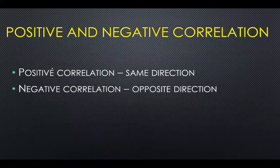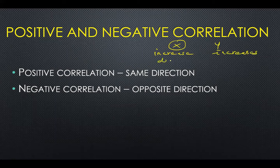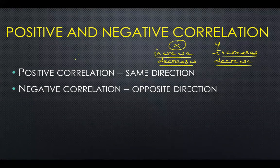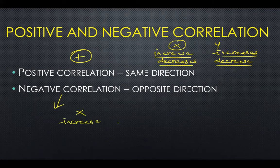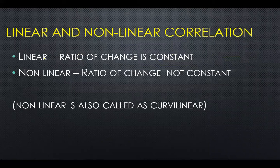Positive correlation means the variables move in the same direction. If x increases, y also increases; if x decreases, y also decreases — increase-increase or decrease-decrease. Negative correlation is the opposite direction: x increases while y decreases, or x decreases while y increases.